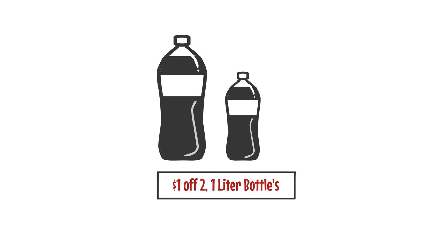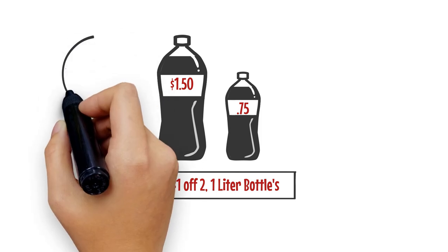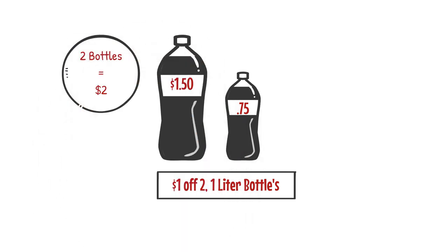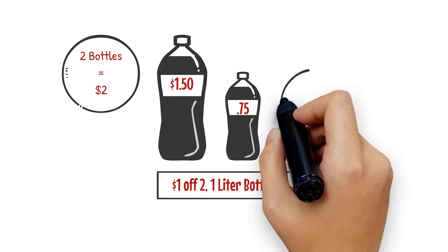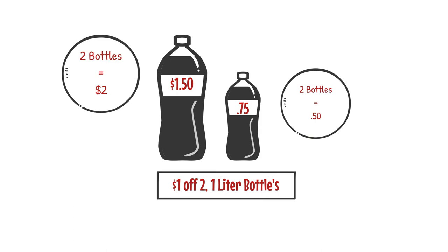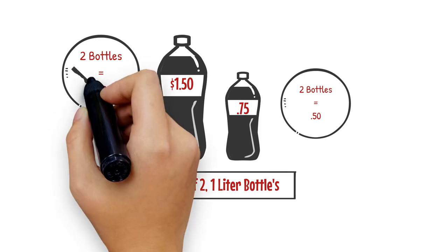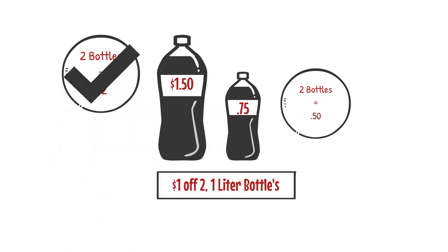The larger bottle is a dollar fifty and the smaller bottle is 75 cents. Two bottles of the dollar-fifty soda comes to three dollars; with the one-dollar-off coupon, that makes two bottles two dollars. Two bottles of the smaller soda at 75 cents makes it a dollar fifty, and with the dollar-off coupon, two bottles come to just fifty cents.